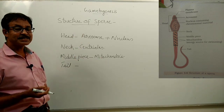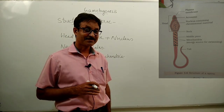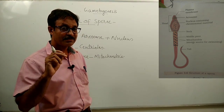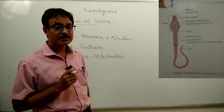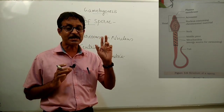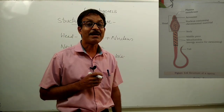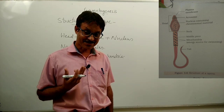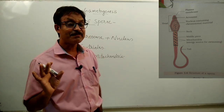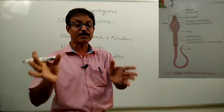Do you know how many sperms are produced in one ejaculation? Around 200 to 300 million sperms are released in one ejaculation or a single sexual event. For normal fertility, 60% should be of normal size and shape, and 40% should possess motility power.